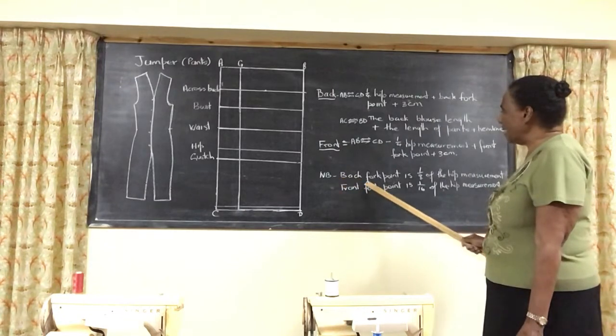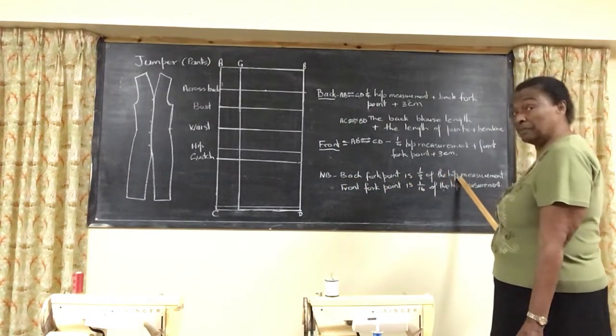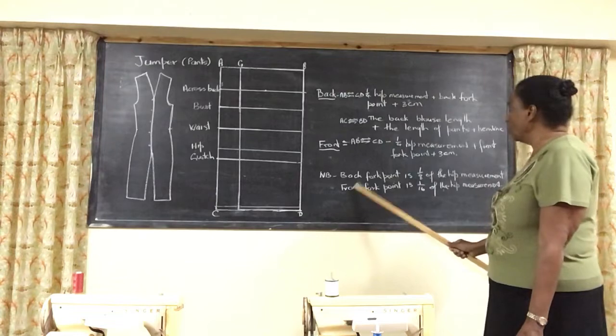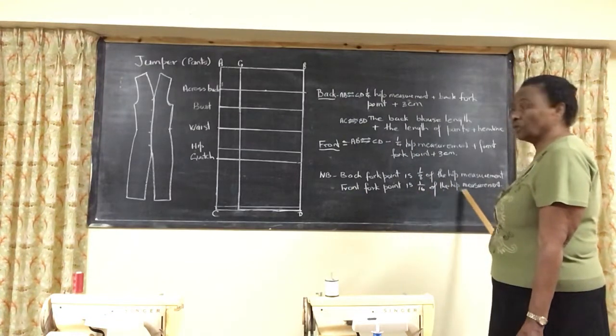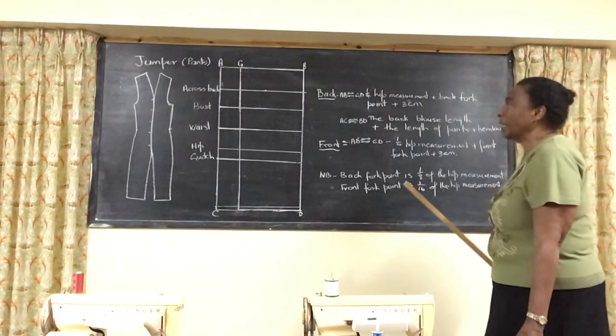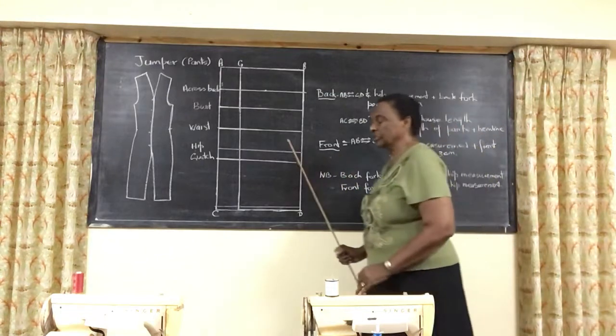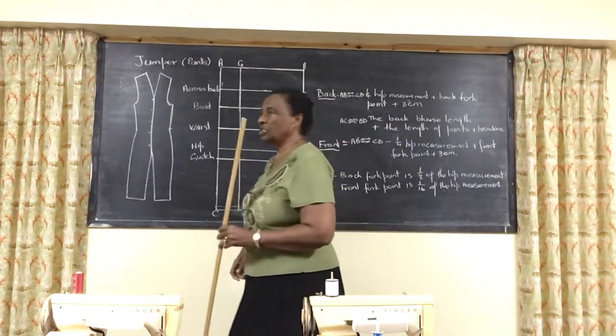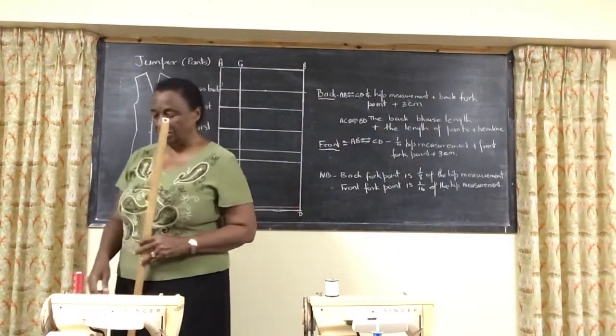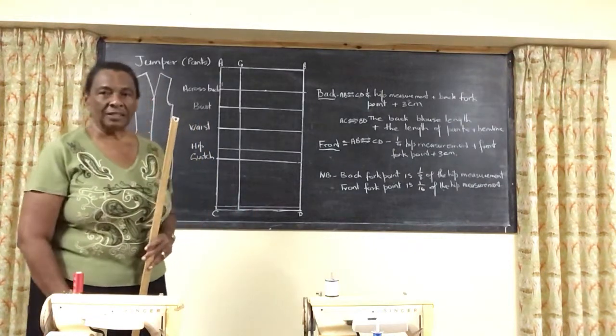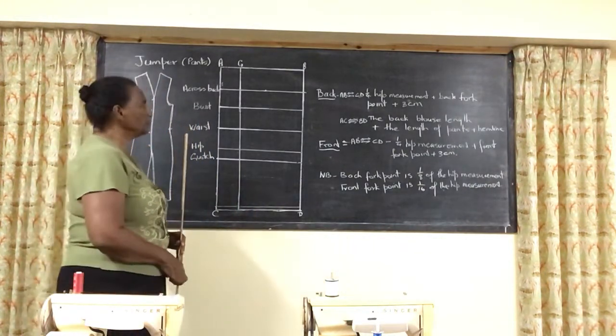Remember that the back fork point is 1/8 of the hip measurement and the front fork point is 1/16 of the hip measurement. You can look at the video on the shorts, the costume of the shorts or the costume of the pants if you forget how to do that part of it.